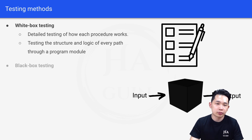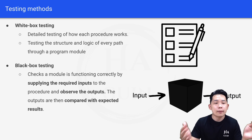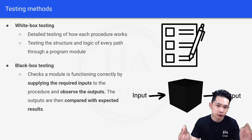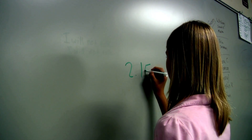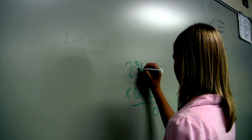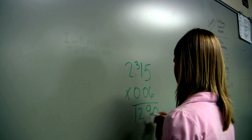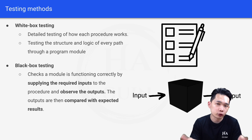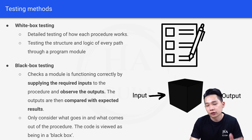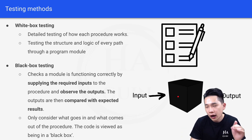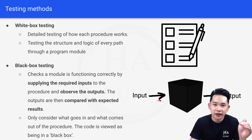Next is black box testing. It checks that a module is functioning correctly by supplying the required inputs to the procedure and observing the outputs, which are then compared with expected results. For example, if you develop a module that does multiplication of two numbers and you put in 2 and 3, you should get 6. If you put in 4 and 5 and get 10, the module is not functioning correctly since the answer should be 20. Black box testing only considers what goes in and what comes out — the code is viewed as being in a black box, so we do not know how the code works internally.